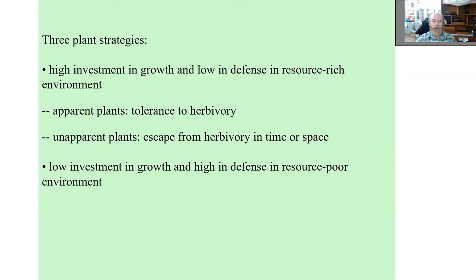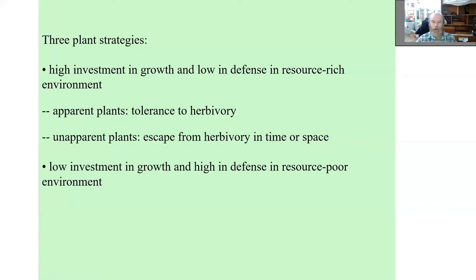In resource-rich environments, plants can have high investment in growth and low investment in defense. In resource-poor environments, it's more typical to have low growth and high defense. In high-resource, competitive environments, fast growth makes it easier to compensate for herbivory and tolerate it. Apparent plants are those easily found by herbivores; unapparent plants are unpredictable in space and time, making them difficult for herbivores to track. Even if unapparent plants are not well defended, they can escape herbivory.